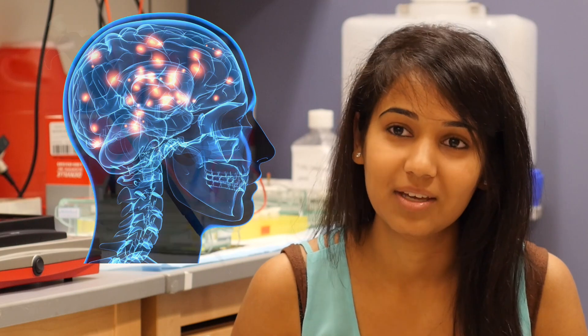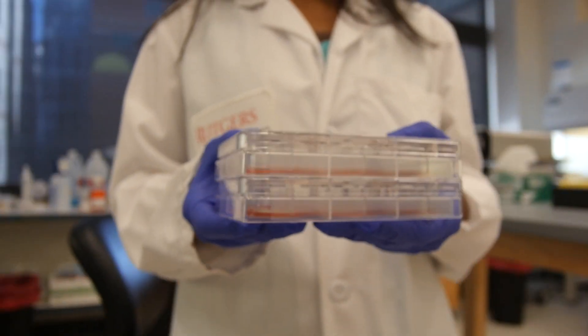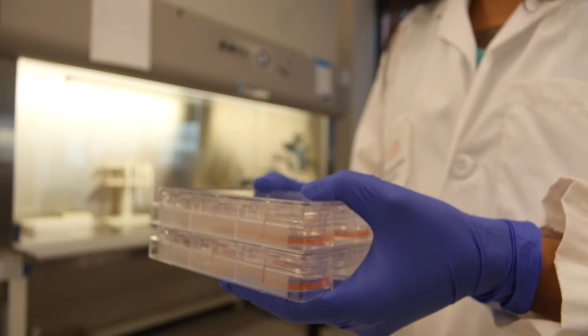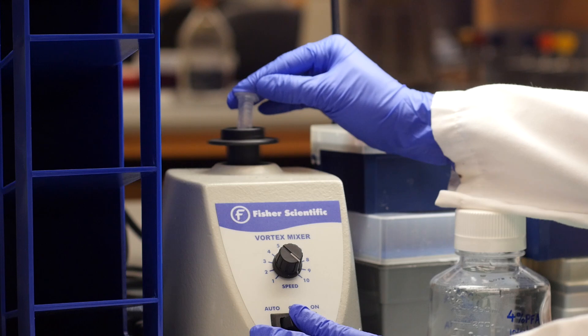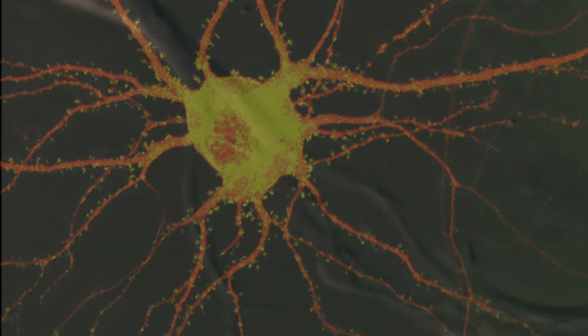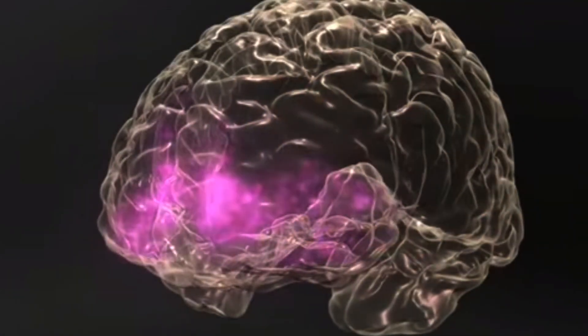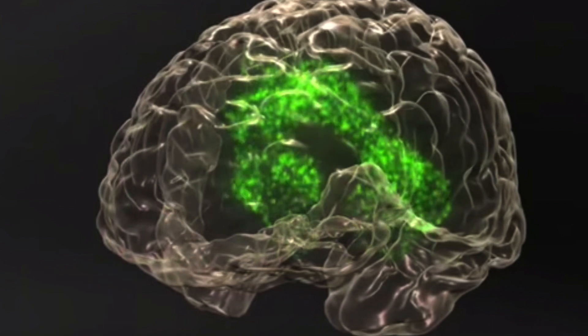I work with stem cells in the lab that came from subjects who have alcoholism and subjects who don't. We can use these stem cells, convert them into neurons, which are brain cells, and study how these brain cells communicate with each other and how they ultimately control reward behavior and how this malfunctions in situations where someone may have alcohol addiction.